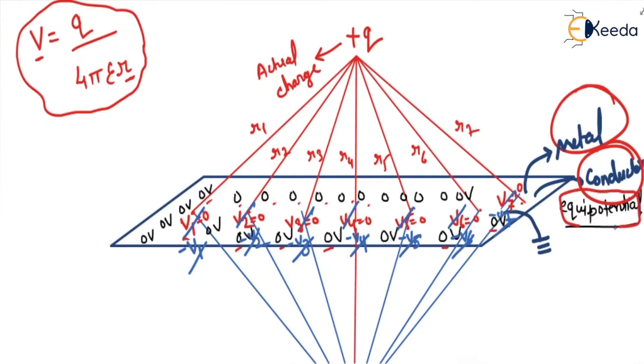We know one property of conductor: it is equipotential. One of the points of this conductor is grounded, so we know that all the points on the conductor will be at zero volt. Now if we keep one charge plus q at any particular height from this metal, from this grounded conductor.